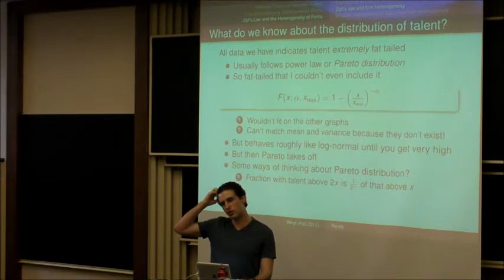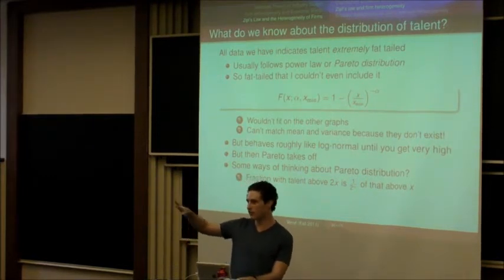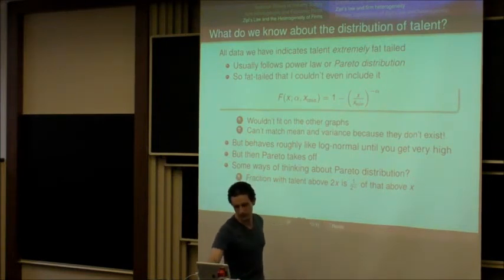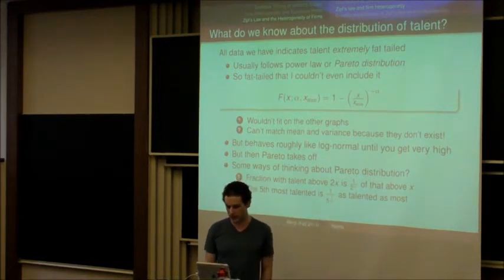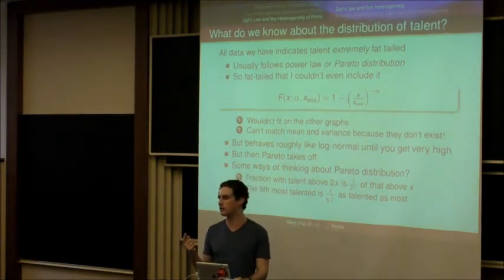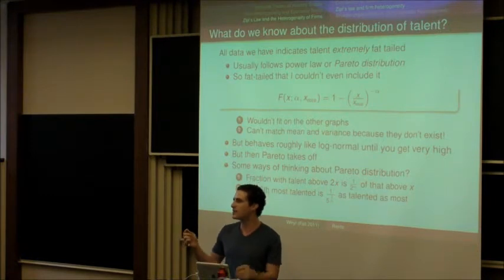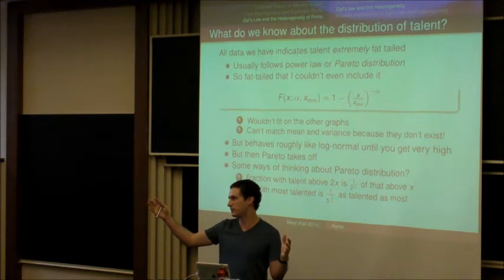If you went to four hundred thousand dollars, it would still be 25 people earning more than that. It's a very slow process of dying out above some level. Another way to think about it is that if alpha equals one, the fifth most talented person is one-fifth as talented as the most talented person. That means there are huge differences between people at the very top.